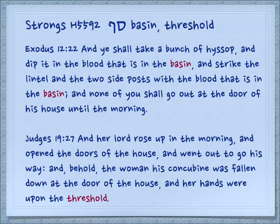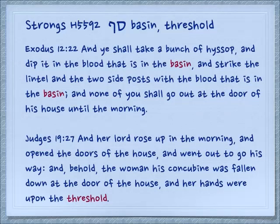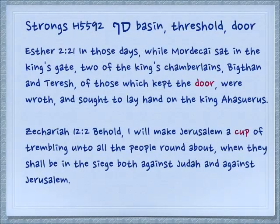Judges 19:27: 'And her lord rose up in the morning and opened the doors of the house and went out to his way, and behold the woman his concubine was fallen down at the door of the house and her hands were upon the threshold.' Maybe the most gruesome chapter in the Bible. Also the concept of a door.